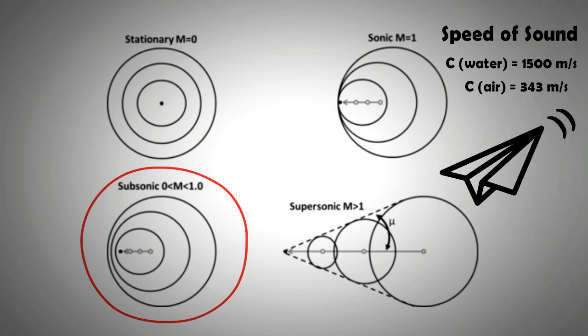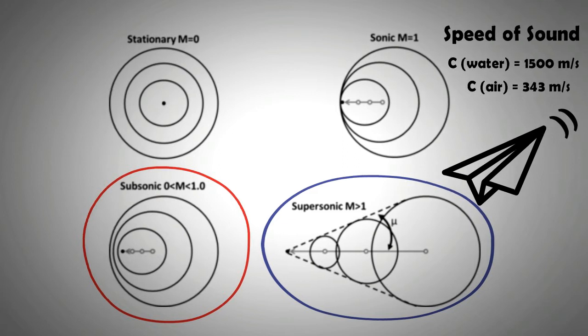When an object outspeeds the ripple it created, this results in a bang-like sound. It is because of the creation of shock waves. This sound is called the sonic boom.